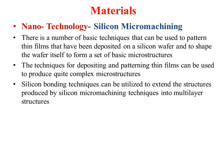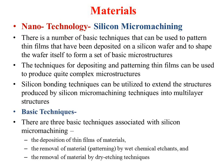There are three basic techniques associated with silicon micromachining: first, deposition of thin film material; second, removal of material by wet chemical etchant; and third, removal of material by dry etching technique. So you first deposit the thin film, then remove it either by wet chemical etchant or by dry etching.